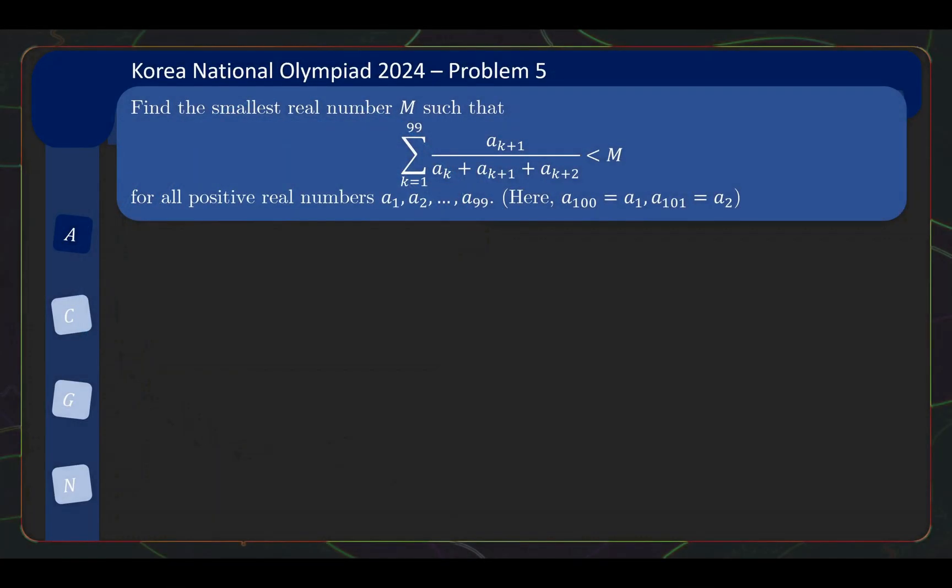So this is an algebra problem, and problem 5 over here is actually the first problem from the second half. So it's expected that this will be a manageable problem, and indeed we'll see that the solution can be motivated. Here's the problem statement: find the smallest real number m such that this sum over here is always less than m, no matter how we choose the positive real numbers a1, a2, through a99.